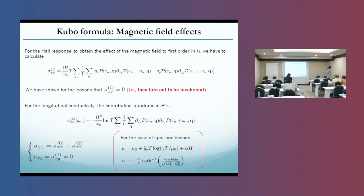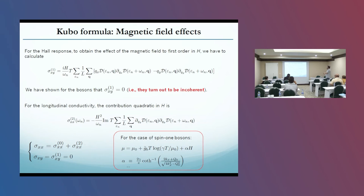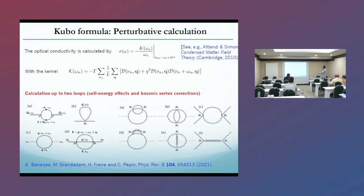We can also use the Kubo formula to calculate magnetic field effects. For the Hall response, we get zero response for the bosons — meaning these bosons turn out to be incoherent. We can also calculate the longitudinal conductivity and the bosonic mass, getting a T log T dependence and also a linear-H dependence.